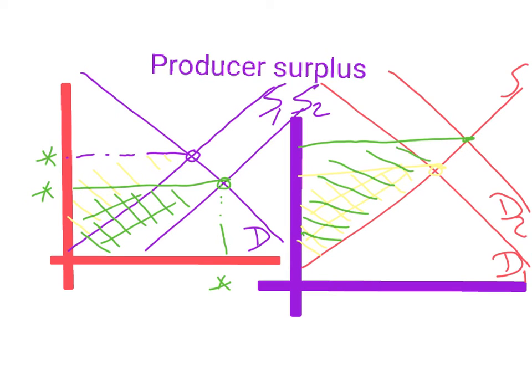And you can actually see that it's bigger than the yellow area, because the yellow area is included, a subset of the green area. So in this particular case, if demand increases, we would have an increase in producer surplus.